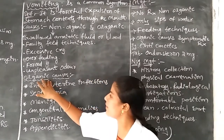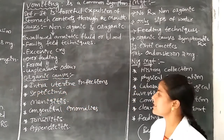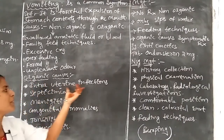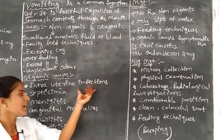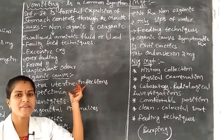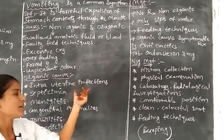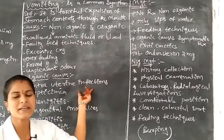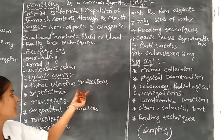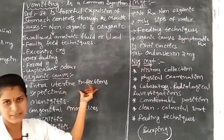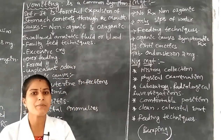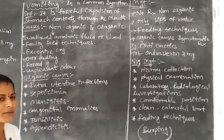Now for organic causes: the first is intrauterine infections. In the mother's womb or uterus, if the mother has any uterine infections caused by viruses or bacteria, the uterus becomes infected, and due to that the fetus or infant may have vomiting conditions.